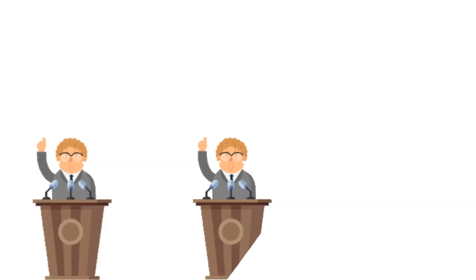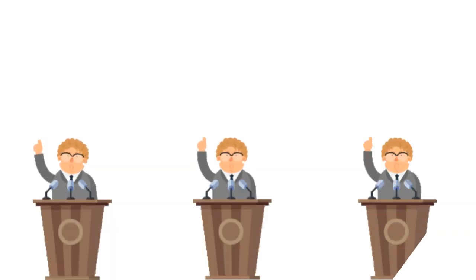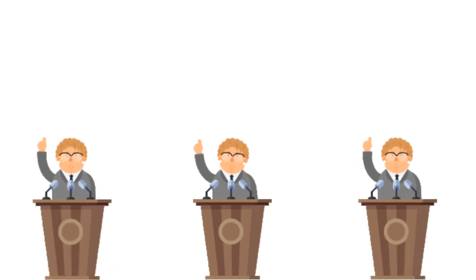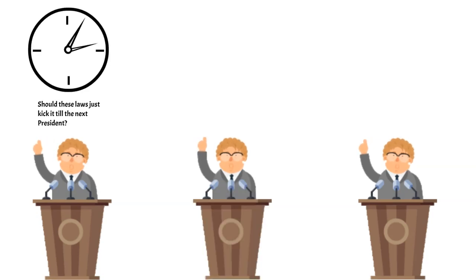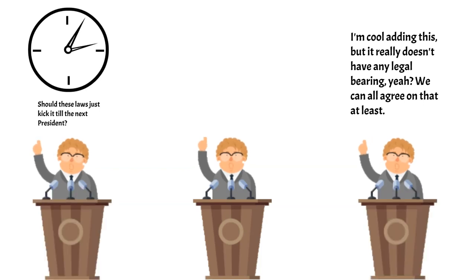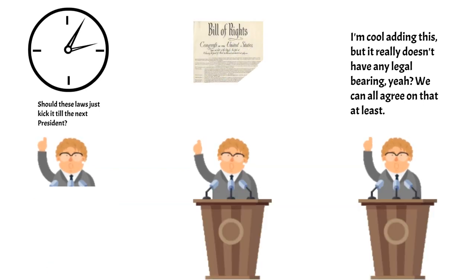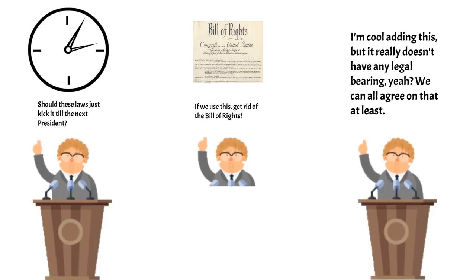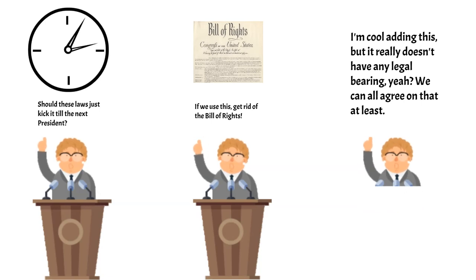It wasn't until the first drafts of the Constitution were being written that anyone even proposed the idea, sparking a debate on how long it should be and what purpose beyond tradition it might serve. It was generally agreed that the preamble would be added, but with no intent to make it part of the legal effect of the Constitution. It was also argued that, with the inclusion of the Bill of Rights, the preamble might be redundant — or vice versa, that the Bill of Rights might not even be needed if the preamble was included.